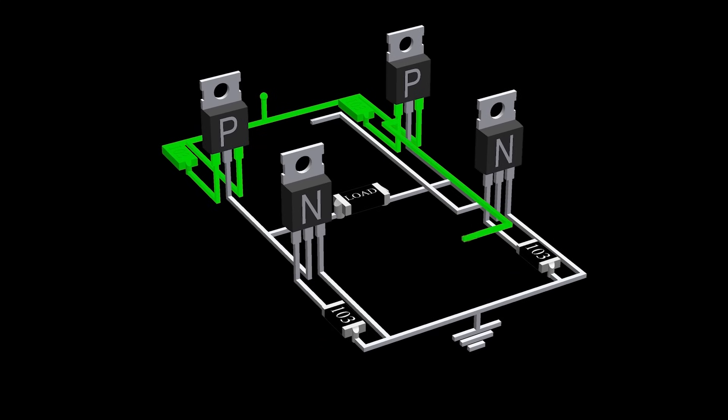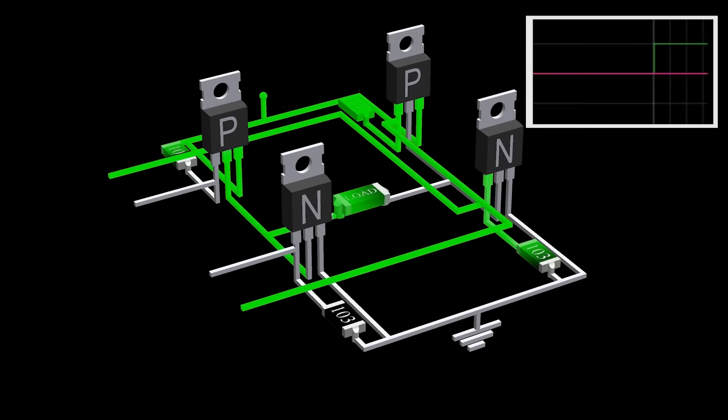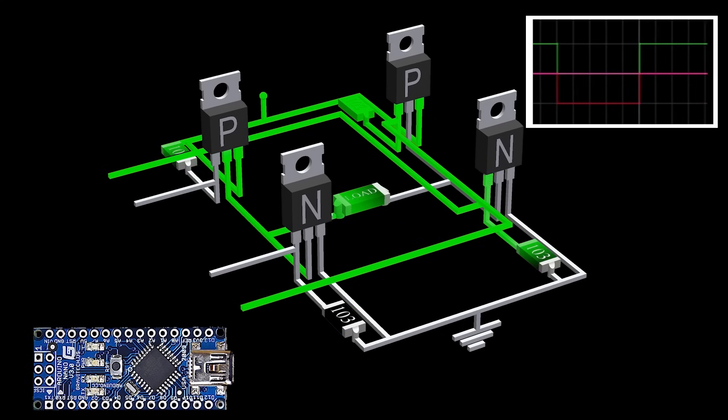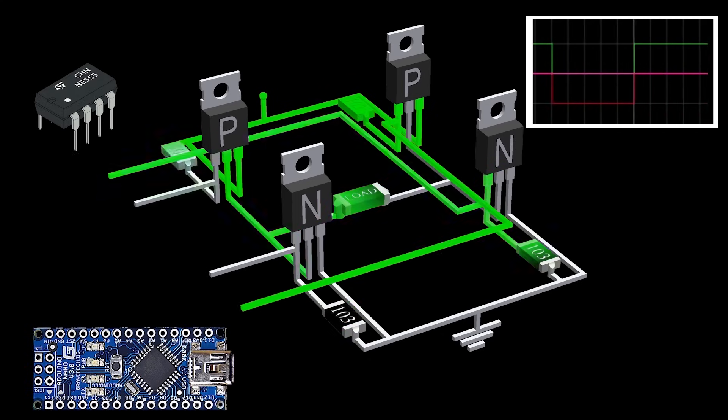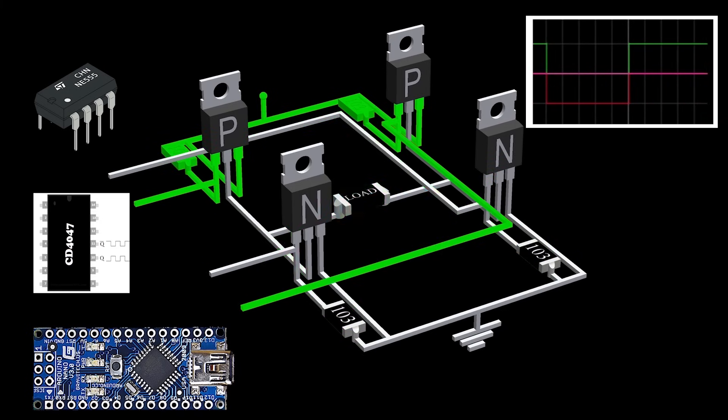Now, depending on the PWM applied to the MOSFETs, we can achieve different waveforms at the load. If the switching between MOSFETs is done without any delay, we get a square wave across the load. You can use a microcontroller, or multi-vibrator, like 555 timers, or IC4047, to create the PWM signals for the switching, with the frequency of 50 or 60 hertz.